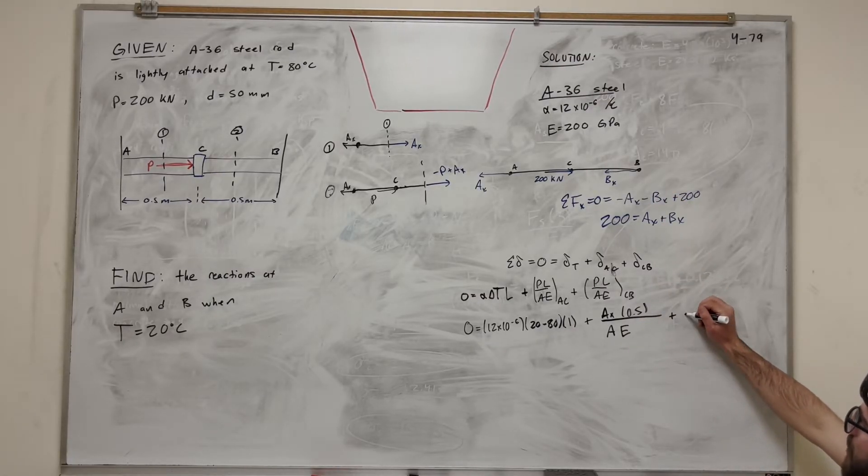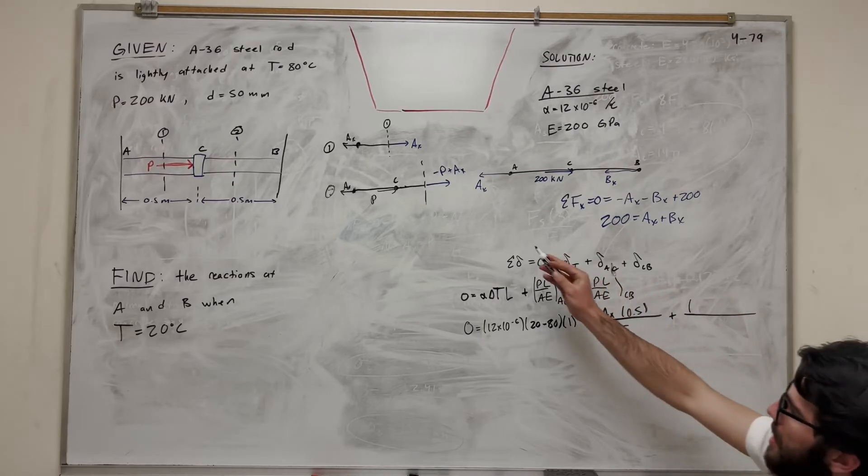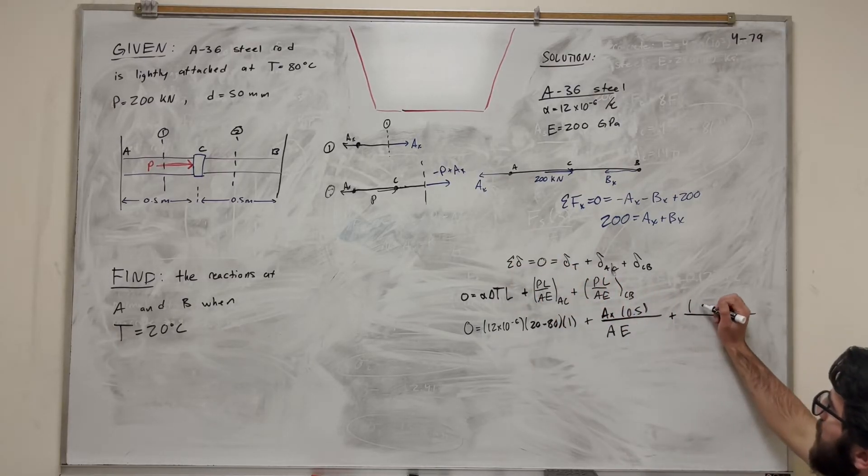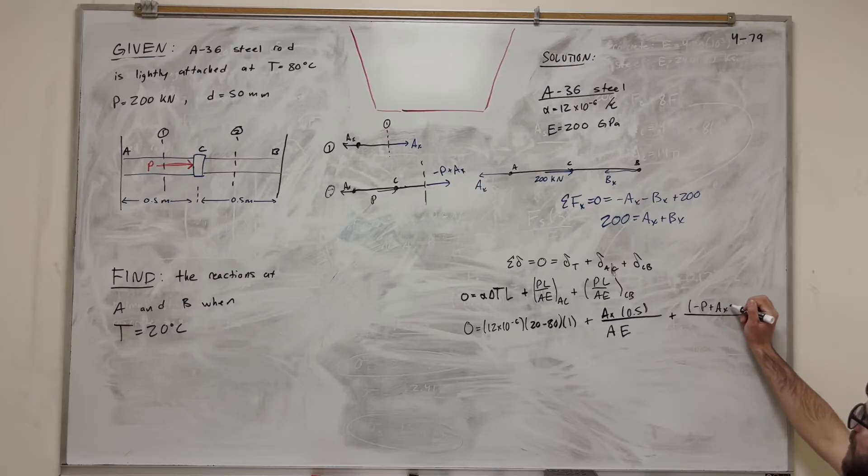And then we're going to add that again to the next one. So this time, we said the normal force is negative P plus A_X. So we're going to label this minus P plus A_X. Its length is 0.5. And then this is, again, going to be area times elasticity. Right? Let's just draw area up here.